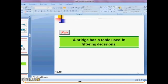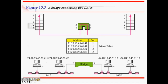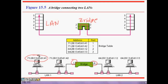A bridge maintains a table for making forwarding decisions. We have a bridge connecting two LANs with two ports — LAN 1 is connected via port 1, LAN 2 via port 2. LAN 1 has two machines and LAN 2 has two machines, each with 48-bit MAC addresses. The table says: if this is the MAC address, forward it to port 1.